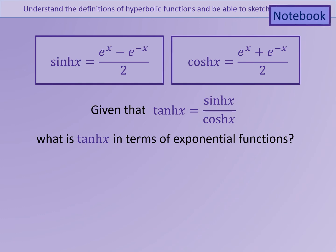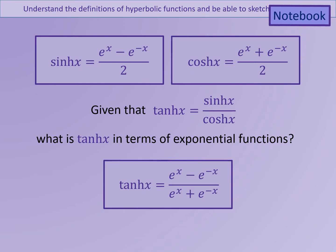Given that tanh x is sinh x over cosh x — in a very similar way to how tan x can be defined as sin x over cos x in trigonometric functions — can we express tanh x in terms of exponential functions as well? The answer is yes. If we express sinh x over cosh x, we can see that the denominators, which are 2 in both cases, will cancel out, leaving us with e to the x minus e to the minus x over e to the x plus e to the minus x.